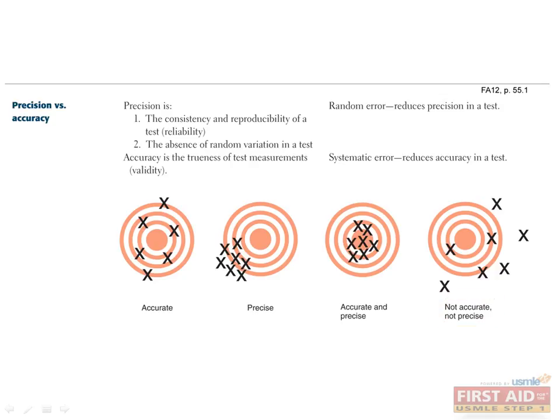Random error is basically the antithesis of precision. It reduces the consistency and reproducibility of a test. On the other hand, systematic error reduces the accuracy of a test by consistently skewing results in a particular direction and thereby reducing the validity of the test measurements.